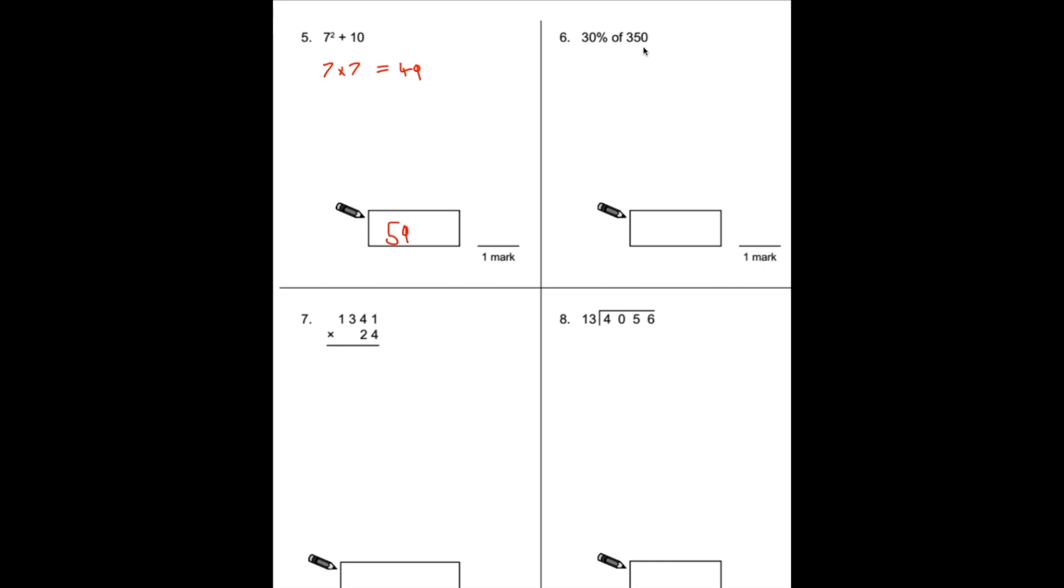Number 6: 30% of 350. What I always tend to do is find 10%. To find 10%, we divide by 10. 350 divided by 10 is 35, so that equals 10%. If we want to find 30%, we just times this by 3, because 10% times 3 makes 30%. So 35 times by 3: 30 times 3 is 90, 5 times 3 is 15. We'll add them together: 90 add 15 is 105.